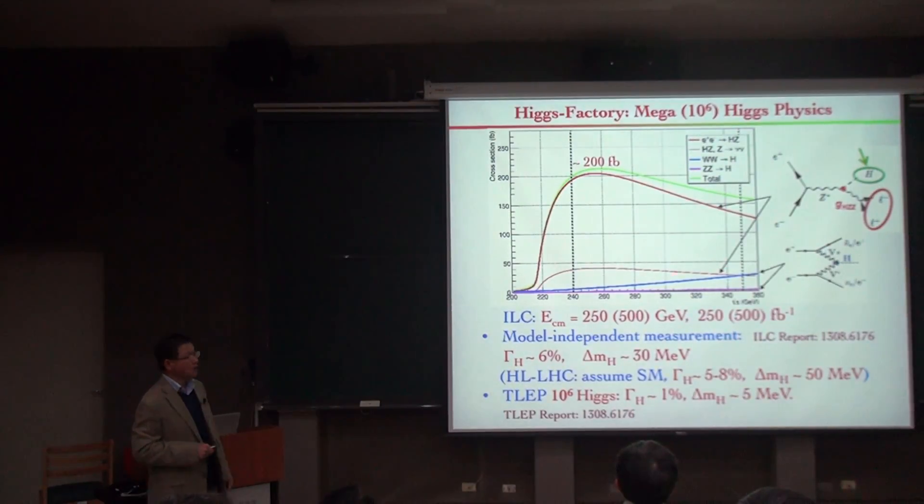Then the accuracy immediately more over root N. So you have a huge accuracy to measure this. Then you can measure this up to the model independent measurements of these processes, percent level for the total width. Total width is much more important than mass. Mass is a free parameter you can get from anywhere.